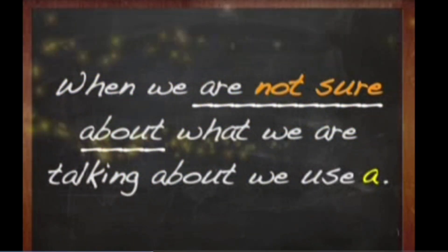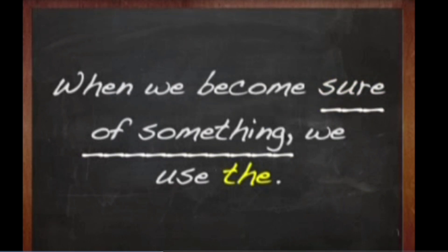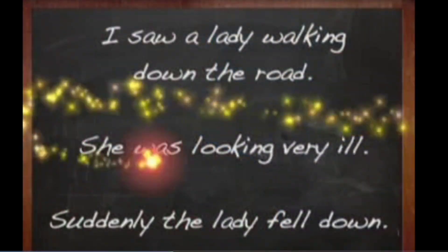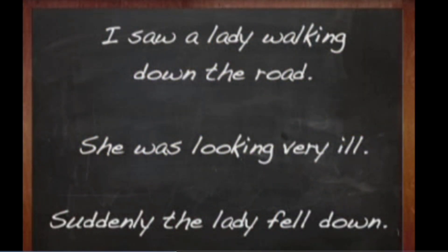I think when we are not sure about what we are talking about, we use 'a'. When we become sure of something, we use 'the'. Is that right, Wiz? Absolutely right. Read this: I saw a lady walking down the road. She was looking very ill. Suddenly, the lady fell down. When the speaker was talking about a lady in the first sentence, it was just someone he saw on the road. By the time he spoke the third sentence, the speaker and us know that it was the same lady that he spoke about in the first sentence.